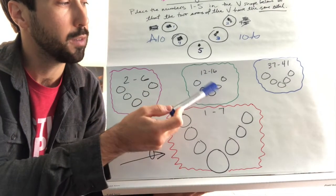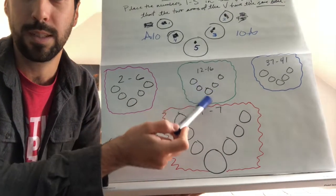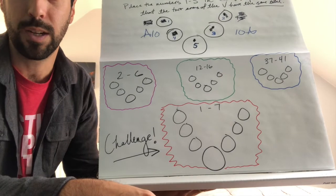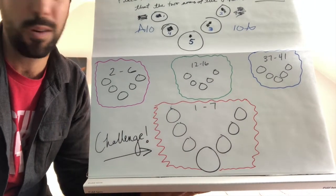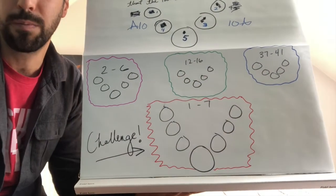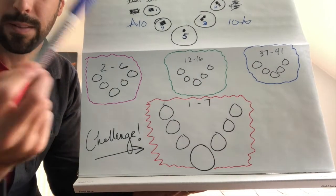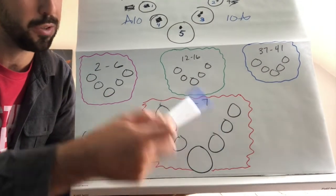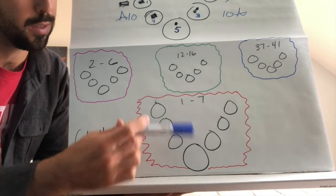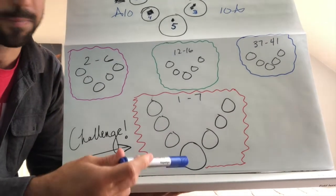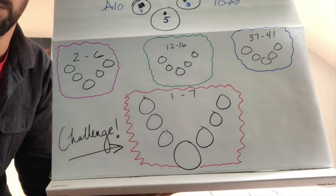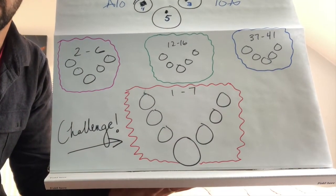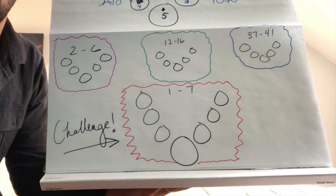Can you figure out a way to place the numbers 12 through 16 in the v-shape below? The numbers 37 through 41 in the v-shape below have the same total. Then your next challenge, the ultimate challenge here, can you place the numbers 1 through 7 in this v-shape, which has 1, 2, 3, 4 circles on each arm, and have the same total going up each arm.